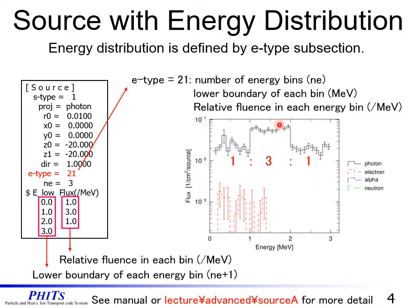In this sample, we set NE equal to 3, so 3 energy groups exist as shown in this figure. The lower boundary of each energy bin requires NE plus 1 values, so the number of bin boundaries is 4. The relative fluences are given by a ratio of 1 to 3 to 1, as shown in this figure.